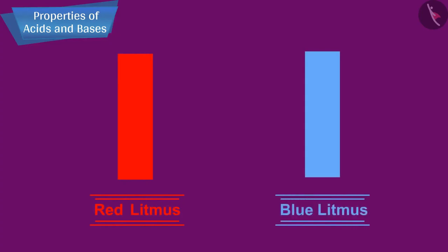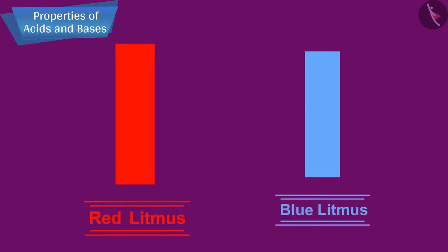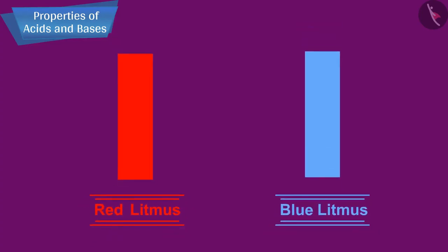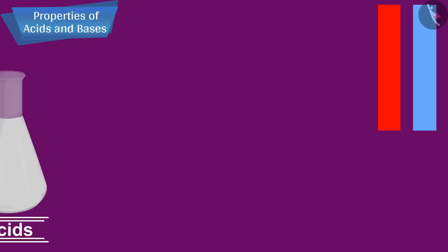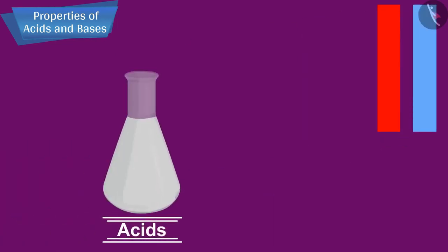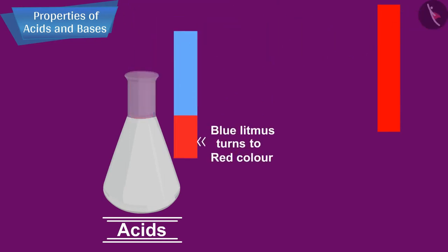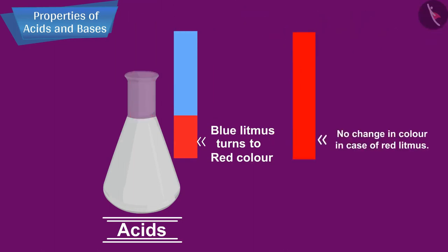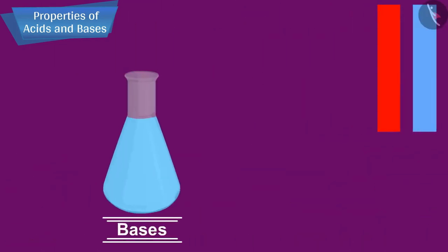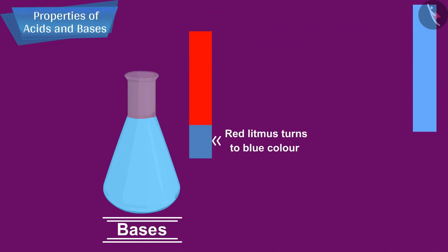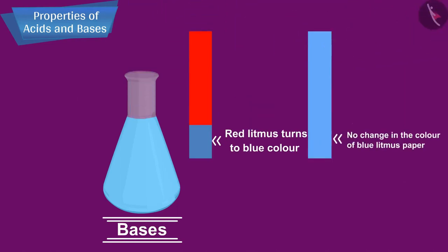Litmus is now available in two forms: red and blue litmus. Acids, which are sour in taste, turn blue litmus to red colour, and there is no change in colour in case of red litmus. Bases, which are bitter in taste, change red litmus to blue colour, and there is no change in the colour of blue litmus paper.